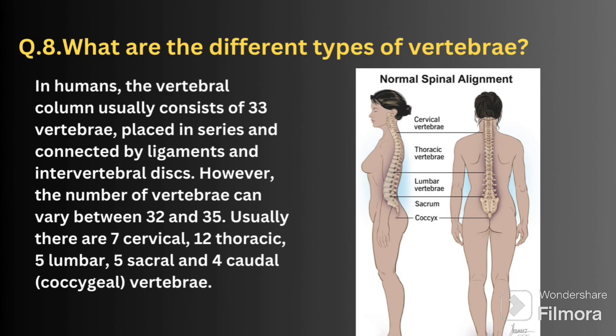The next question is: what are the different types of vertebrae? The vertebral column usually consists of 33 vertebrae placed in series, connected by ligaments and intervertebral discs. The number can vary between 32 and 35. Usually we have 7 cervical vertebrae, 12 thoracic vertebrae, 5 lumbar vertebrae, 5 sacral vertebrae, and 4 coccygeal vertebrae. You can see the image for clear understanding.